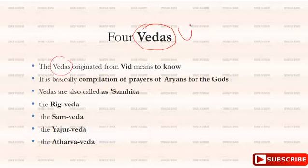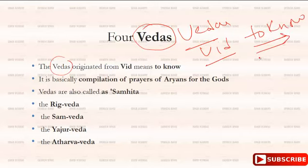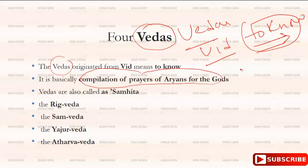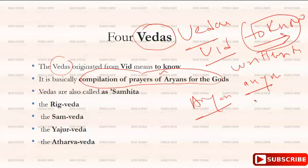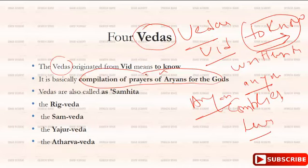The word 'Veda' comes from 'vid', which means 'to know' — meaning knowledge. Vedas are basically a compilation of prayers; they were not written by anyone but compiled. Whatever prayers were given towards the gods, that is compiled here. This compilation is also called Samhita.